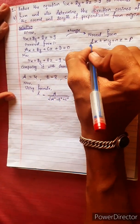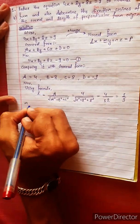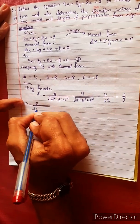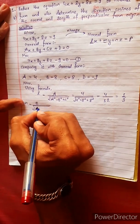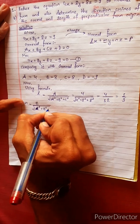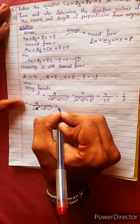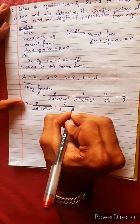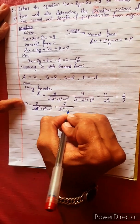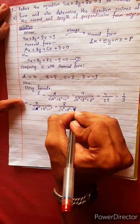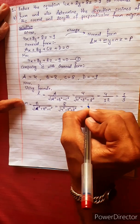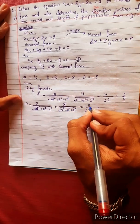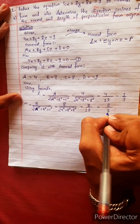m = b divided by √(a² + b² + c²) = 8 divided by √(4² + 8² + 8²) = 8/12 = 2/3.